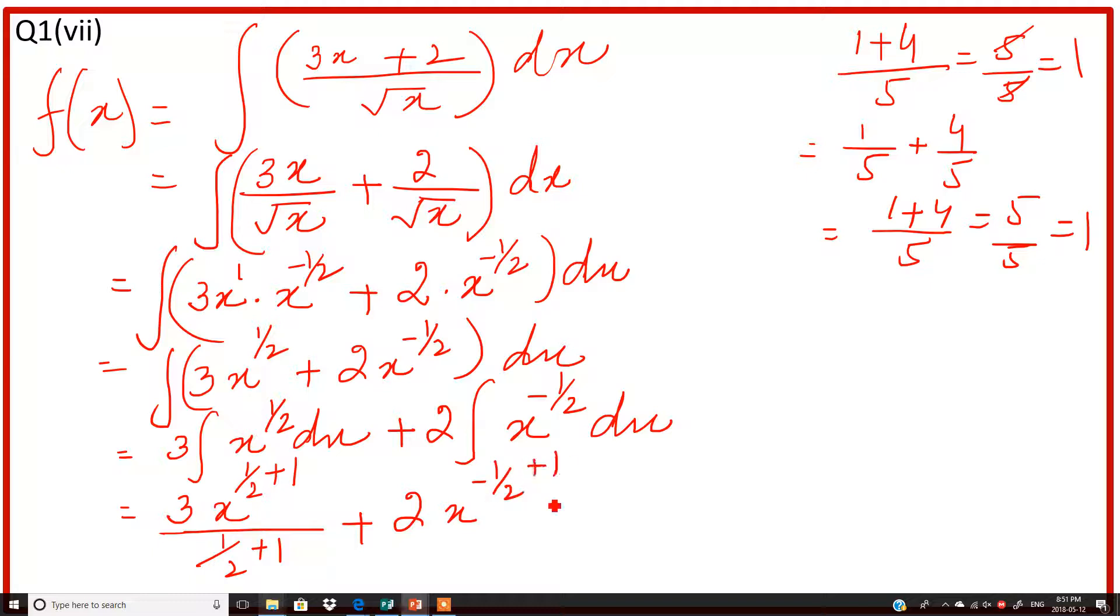You have to write this in the denominator plus constant of integration. So it will be 3x raised to power 3 by 2 divided by 3 over 2, plus 2x raised to power 1 over 2 divided by 1 over 2 plus c.